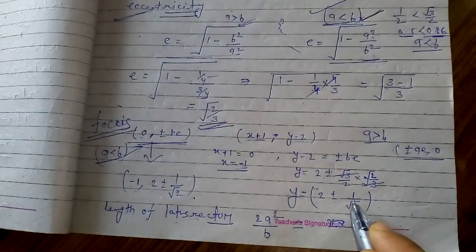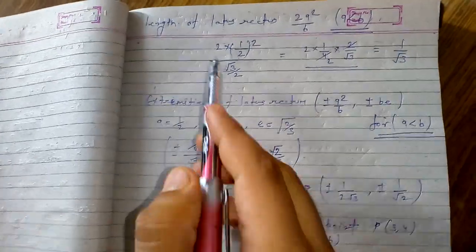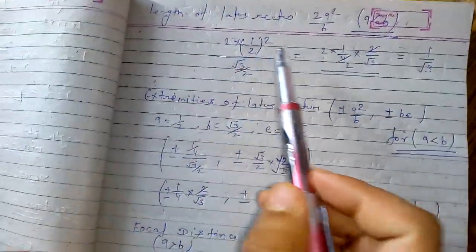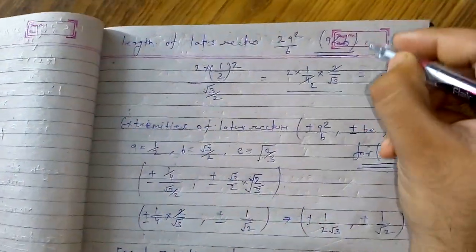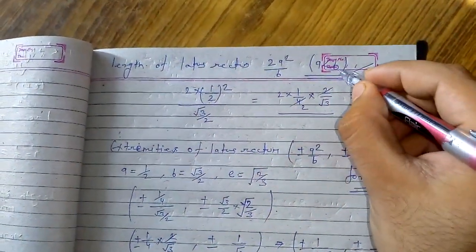Finally, the coordinate of the focus is x equal to minus 1 and y equal to 2 ± 1 upon root 2. Next, we will find out the length of the latus rectum.